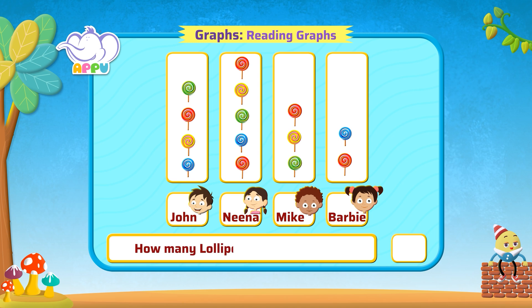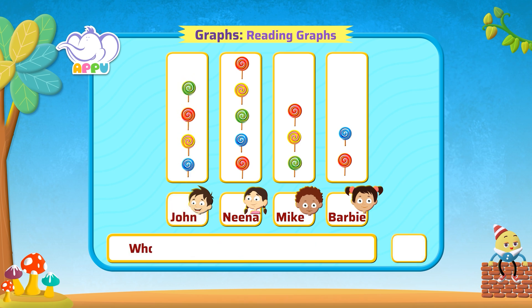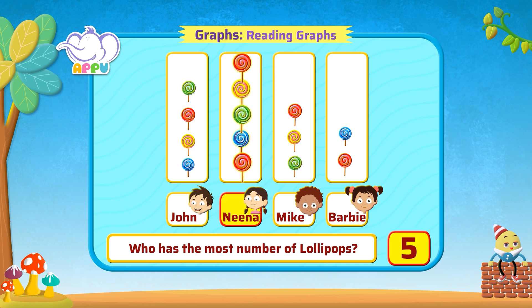How many lollipops does John have? John has four lollipops. Who has the most number of lollipops? We can easily see that Nina has the most number of lollipops, which is five lollipops.